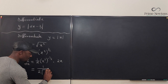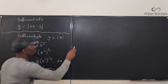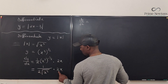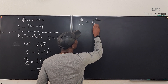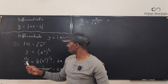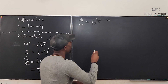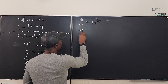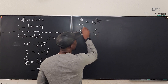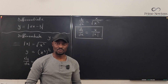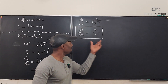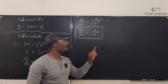We have one over two times the square root of x squared, multiplied by 2x. Placing 2x on top, the twos cancel, giving x over the square root of x squared. Since the square root of x squared is the absolute value of x, we can say dy/dx equals x divided by the absolute value of x. This is the derivative — this is what you get every time you differentiate the absolute value of x.